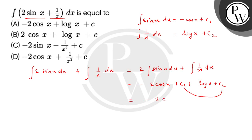So we get the answer: minus 2 cos x plus log x plus c. The correct answer is option A. Thank you.